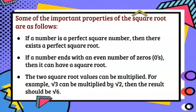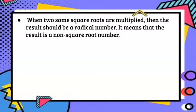The two square root values can be multiplied. For example, the square root 3 can be multiplied by square root 2, then the result should be square root 6. When two same square roots are multiplied, then the result should be a radical number. It means that the result is a non-square root number.